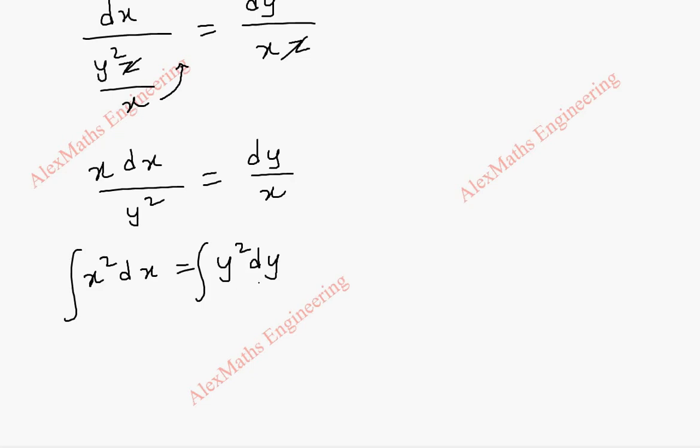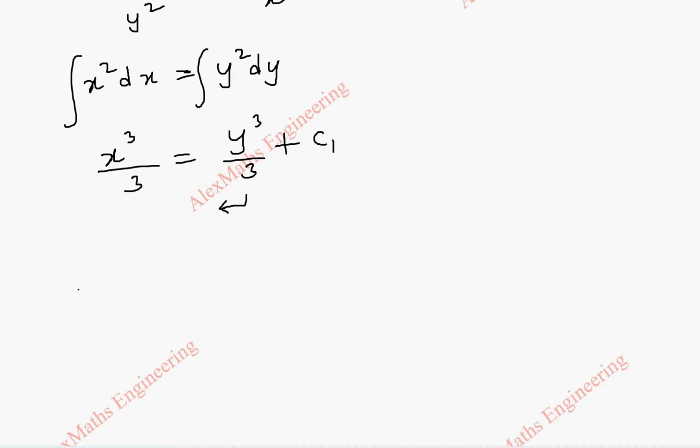Then, it is in the variable separable form, x terms on one side and y terms on the other side. So, we go for integration. This is x cube by 3 equal to y cube by 3 plus c1. Now, taking this term to the other side and make a common denominator, we get x cube minus y cube whole division by 3 equal to c1. So, carrying this 3 here, we get x cube minus y cube equal to 3 c1. So, this is our u, which is x cube minus y cube.